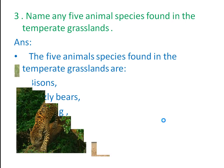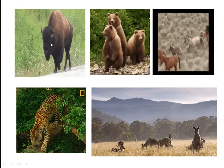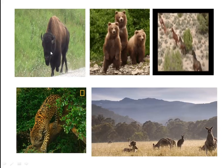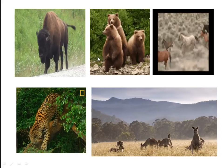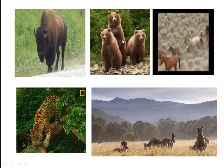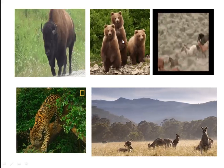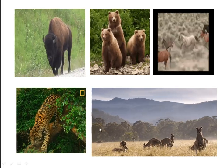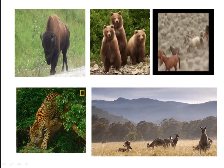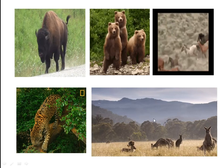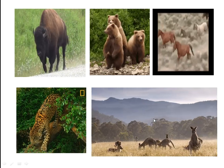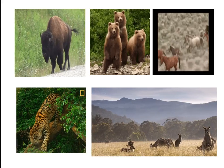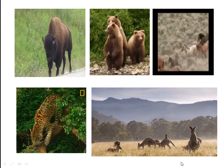I will show the pictures for these animals. Here is the bison, grizzly bears, mustang, jaguar, and kangaroos. These are the five animal species found in the temperate grasslands.